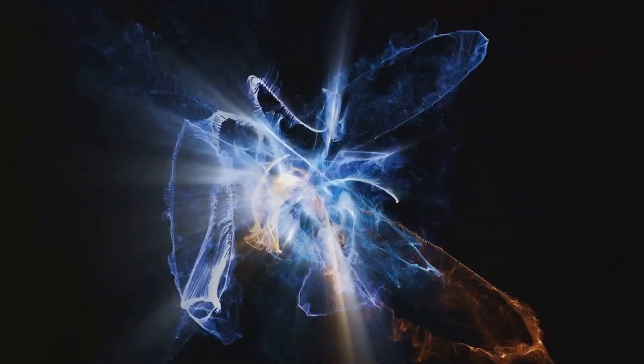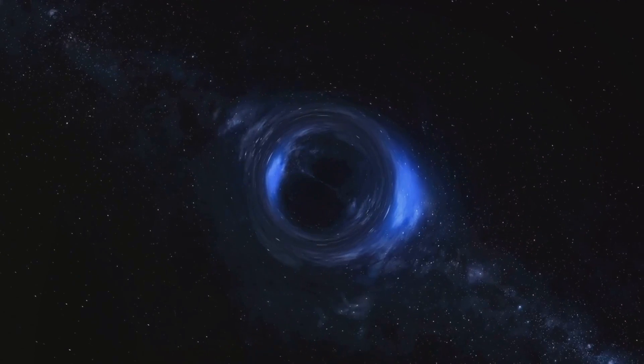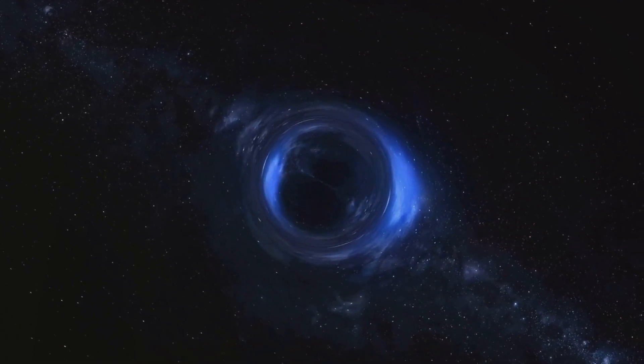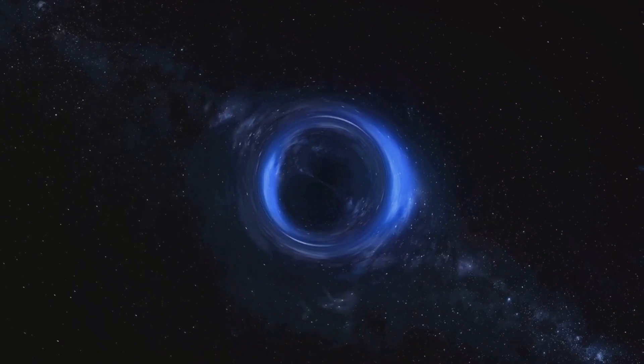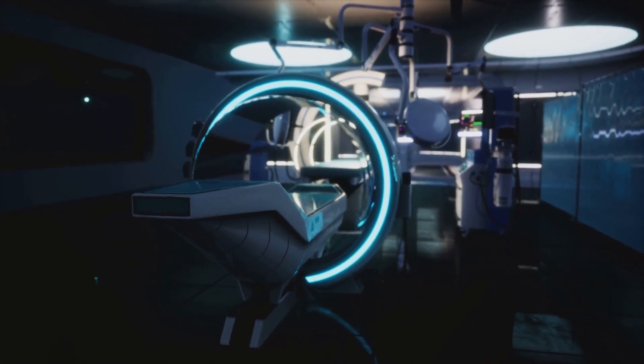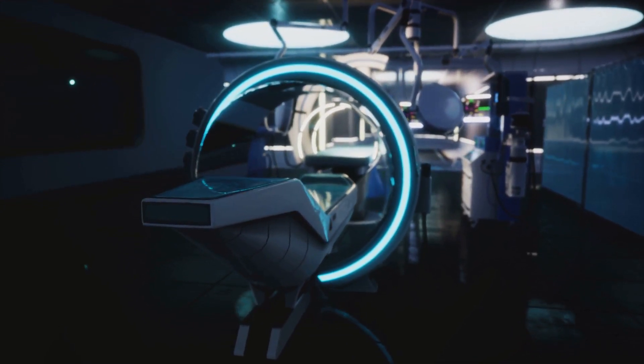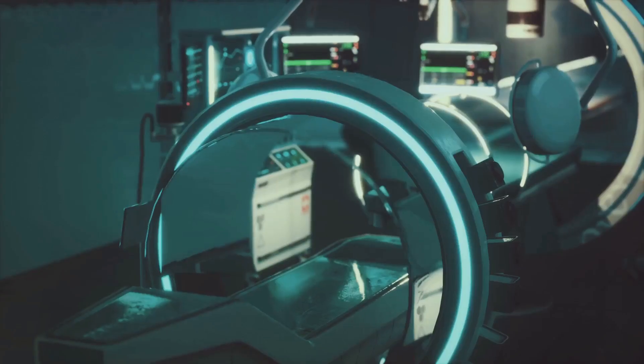Now you might be wondering, how does this mammoth machine accomplish such a feat? Picture a racetrack, but instead of cars we've got protons. These tiny particles are propelled around the ring by a series of superconducting magnets. These aren't your everyday fridge magnets though. These are some of the coldest objects in the universe, chilled to a temperature colder than outer space.